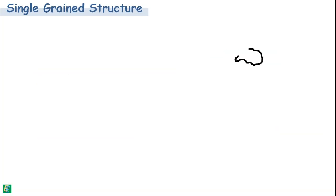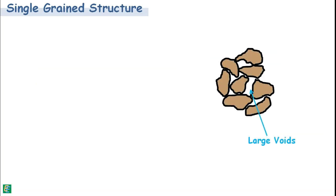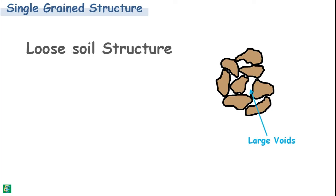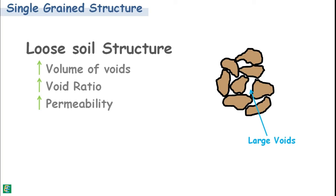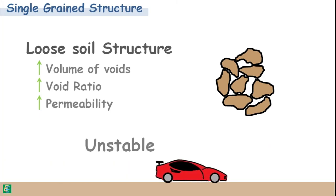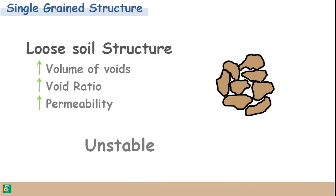Soil particles which are loosely packed, leaving large void spaces between them, make up a loose soil structure. Loose soil structure has a large volume of voids; hence they have high void ratio and high permeability. But they are unstable. When loose soils are subjected to vibrations, their particles move and acquire a more stable position, forming a denser state.